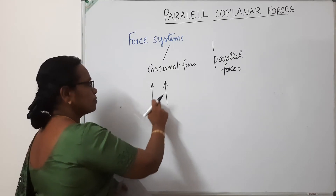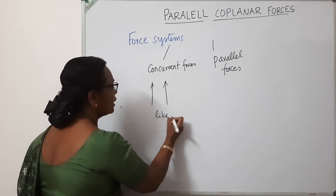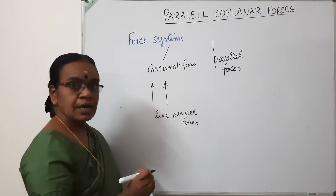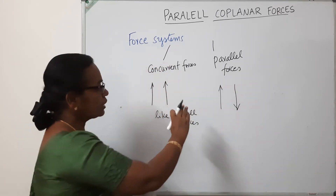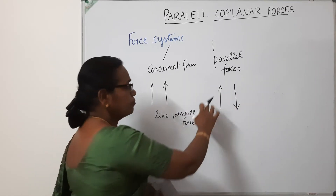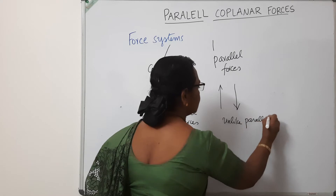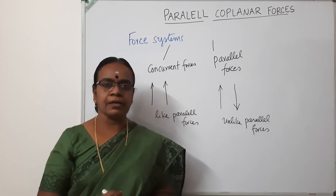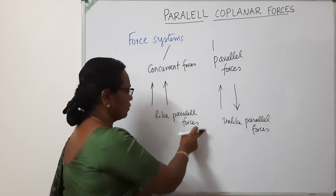If the lines of action of the forces are parallel to each other and the directions are the same — both acting upward — we call them like parallel forces. If the lines of action are parallel to each other but the directions of the forces are opposite, one upward and the other downward, such a force system is called unlike parallel forces. Today's class, we are going to deal with both like and unlike parallel forces and how to find out the resultant of such force systems.